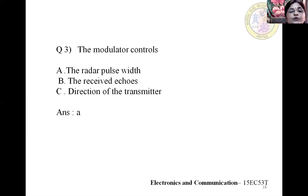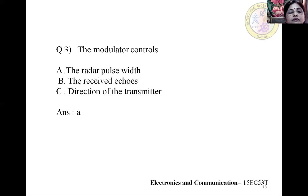Question 3: The modulator controls — A) the radar pulse width, B) the received echoes, or C) direction of the tunnel. The right answer is A — the modulator controls the radar pulse width. Its amplitude and width are controlled by the modulator.